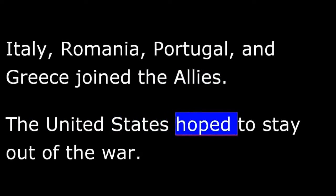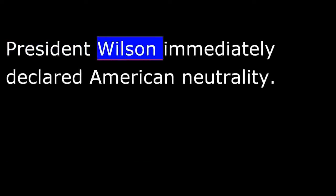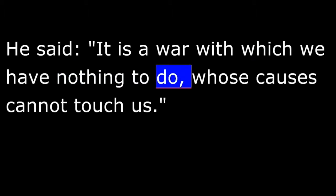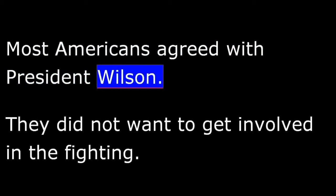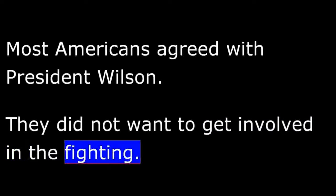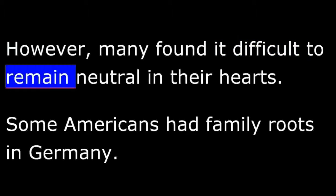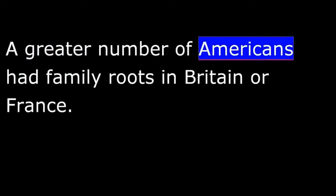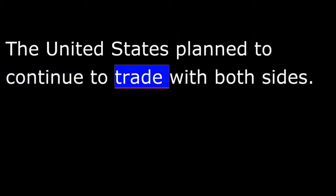The United States hoped to stay out of the war. President Wilson immediately declared American neutrality: "It is a war with which we have nothing to do, whose causes cannot touch us." Most Americans agreed. However, many found it difficult to remain neutral in their hearts. Some had family roots in Germany and supported the Central Powers, while a greater number had roots in Britain or France and supported the Allies. Yet the official American policy was neutrality, and the United States planned to continue trading with both sides.